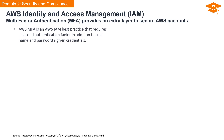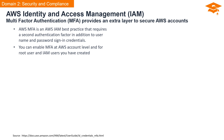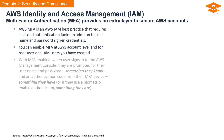For increased security, AWS recommends configuring Multi-Factor Authentication, or MFA, to help protect your AWS resources. MFA is a multi-step account login process that requires users to enter more information than just a password — for example, a code sent to their email, a secret question answer, or a fingerprint scan. You can enable MFA for the AWS account root user and IAM users. With MFA enabled, when a user signs into the AWS Management Console, they are prompted for their username and password (something they know), and an authentication code from their MFA device (something they have), or if using a biometric authenticator, something they are.